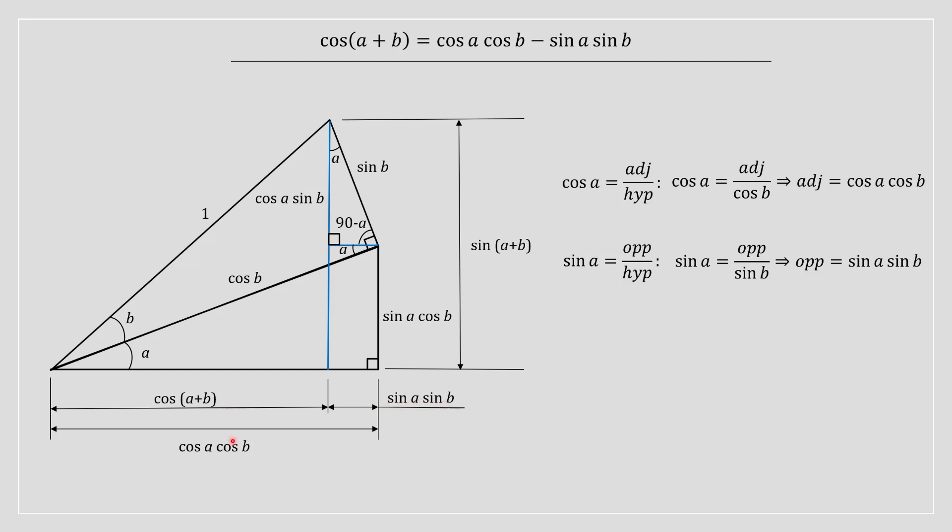And therefore, if you take cos of A cos of B and subtract it with sin of A sin of B, you will get an answer which is equal to cos of A plus B. And therefore, that basically proves the cos additive identity.